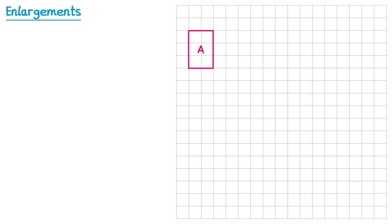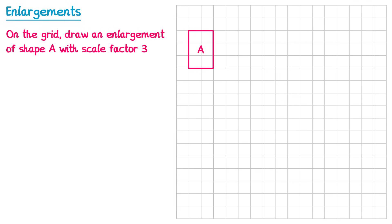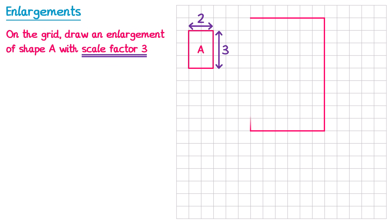Let's have a look at how some exam questions are worded. They might give you a shape on a grid and say: on the grid draw an enlargement of shape A with scale factor 3. If we look at the width of the shape, it's 2 squares. Since we need scale factor 3, we multiply 2 by 3 which gives 6. So the width of the enlarged shape will be 6 squares. Then the height of the shape is 3 squares so we multiply by 3 as well, giving 9. We draw a line down from here which is 9 squares long, and then finish the rectangle.